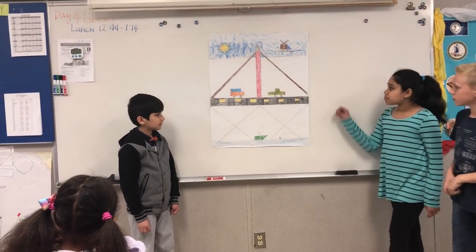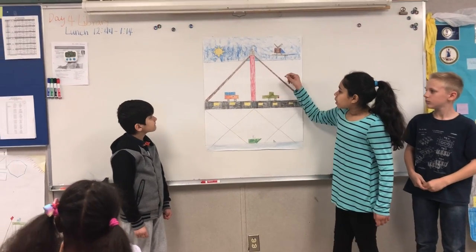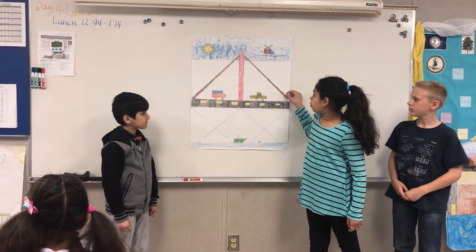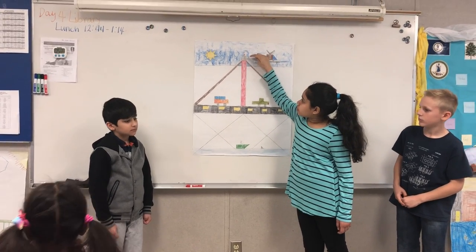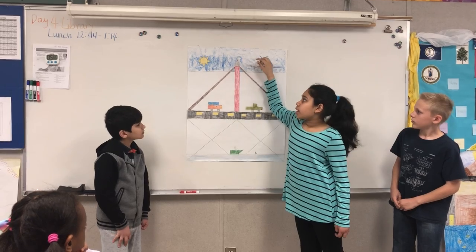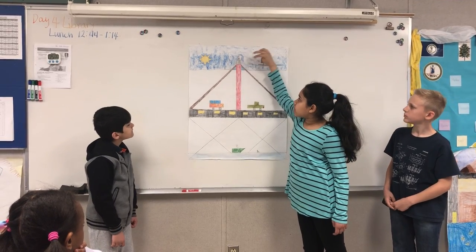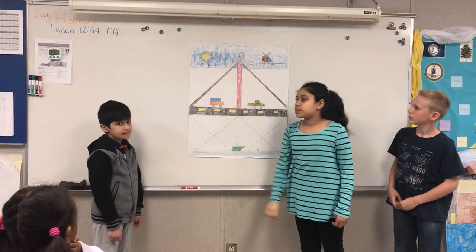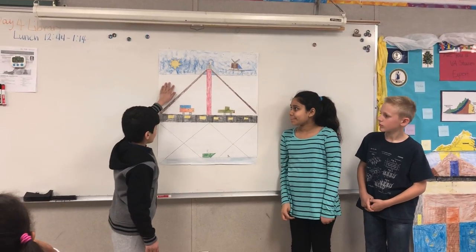Now we're going to move on to the ropes and pole. The pole is parallel lines and the ropes are parallel. We use lines to make this figure and they are two sets of parallel lines. For the bird we did angles and parallel lines.